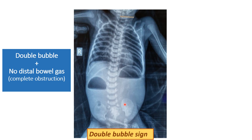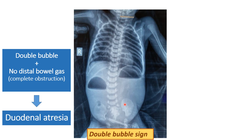Whenever there is an obstruction before the ampulla of Vater, there will be non-bilious vomiting. If the patient is having obstruction distal to the opening of the ampulla of Vater, then the patient will have bilious vomiting. The diagnosis for this type of X-ray will be duodenal atresia.